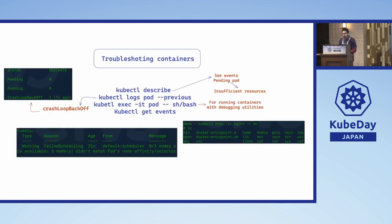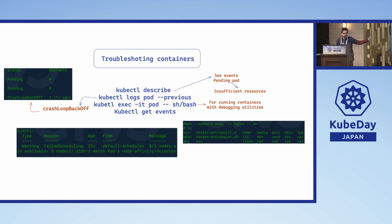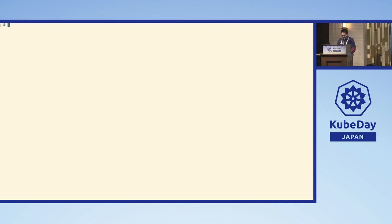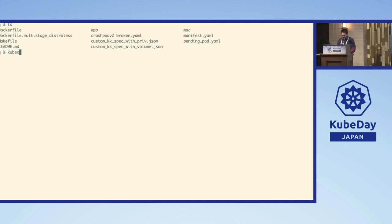For example, if you do kubectl describe you can see events — like if a pod is pending due to insufficient resources. If you have a CrashLoopBackOff you can do kubectl logs, and sometimes you use --previous to get logs from the previous container to see what failed. Then there's kubectl exec with interactive bash or sh to attach and run commands with debugging utilities.